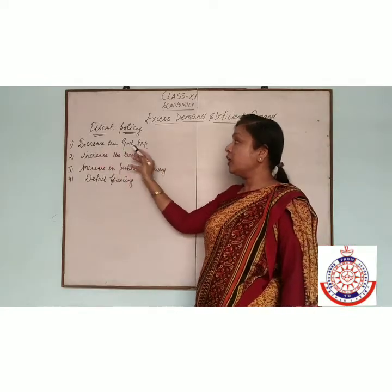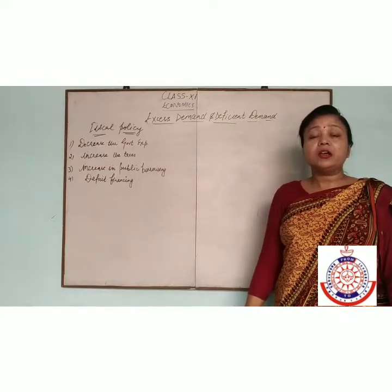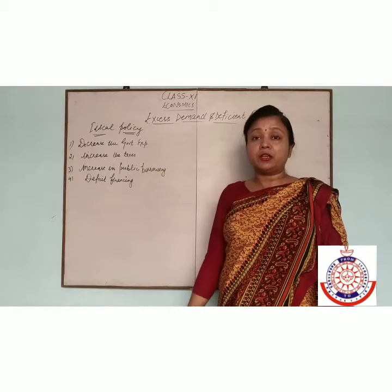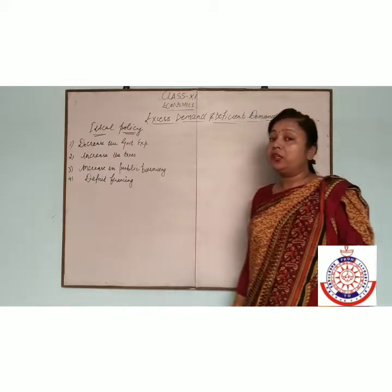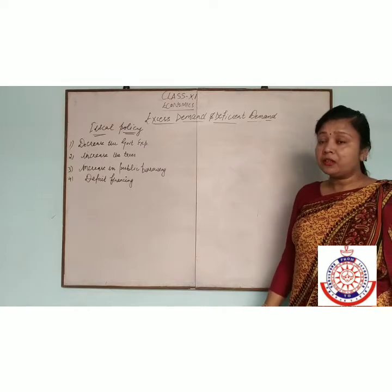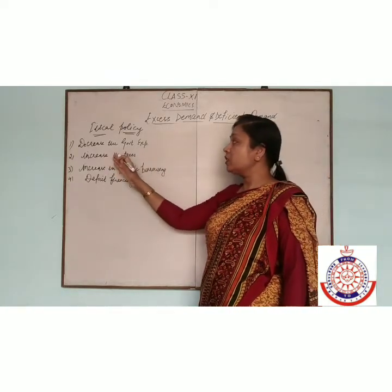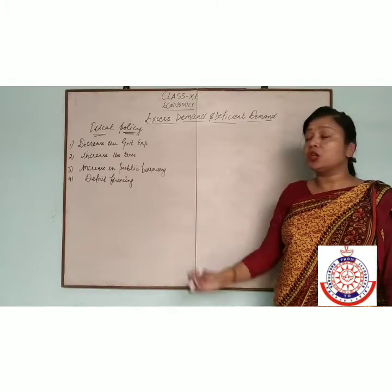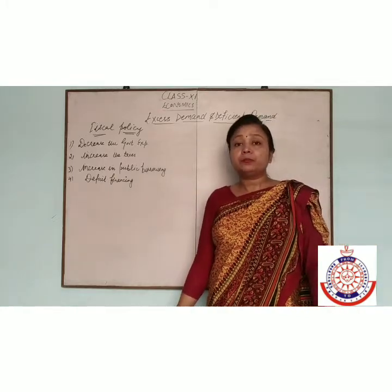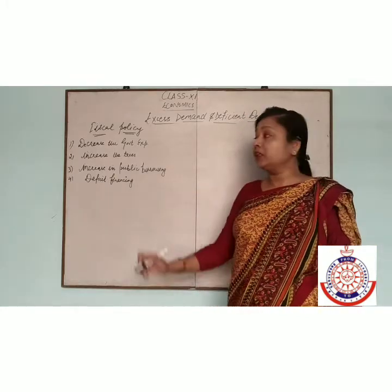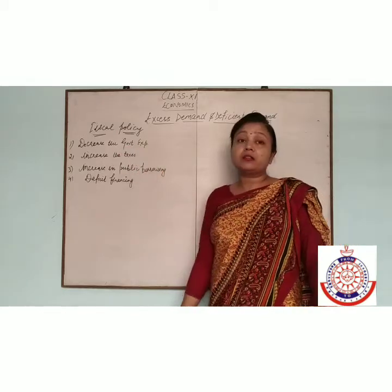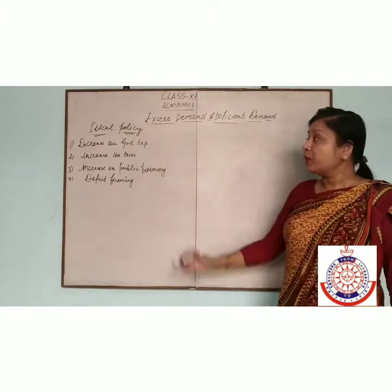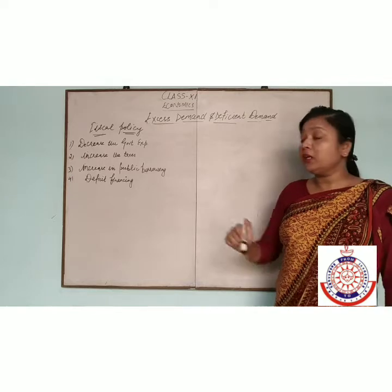First is decreasing the government expenditure. If there is excess demand in the economy, then the government reduces the expenditure. If government reduces the expenditure, then the problem of excess demand will be removed. Second is increase in taxes. The government imposes different taxes — direct taxes or indirect taxes — to the household sector and corporate sector.